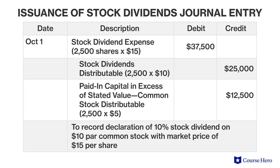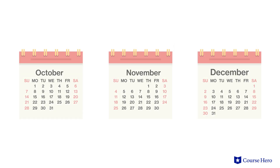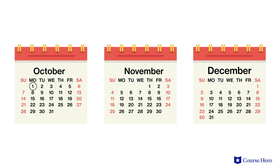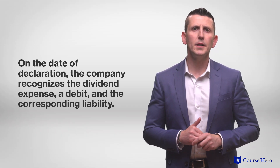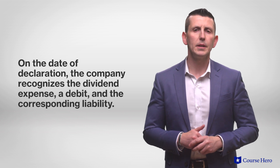Suppose the board of directors of company ABC declares a stock dividend. The dividend will be paid by issuing two thousand five hundred additional ten-dollar par common shares, which at the time of declaration have a value of fifteen dollars each. The dividend is declared on October 1st. The date of record is November 1st and the date of payment is December 1st. On October 1st, the date of declaration, the company recognizes the dividend expense, a debit, and the corresponding liability.